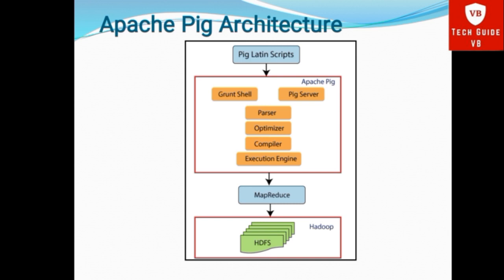Then, Execution. The execution engine takes those MapReduce tasks and assigns them to be executed on the Hadoop system in sorted order. After accessing HDFS — Hadoop Distributed File System — internally, Apache Pig converts this script into a series of MapReduce jobs, thus making the programmer's job easy.